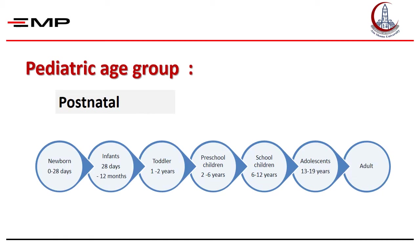After birth starts the postnatal period. The pediatric age group extends from birth to 18 years of age. It is a very dynamic period characterized by continuous changes. So a 3-month-old child is different from a 4-year-old child or a 14-year-old child, so the whole pediatric age group is classified to phases. From 0 to 28 days is the neonatal period. Infants are those aged from 1 month to 12 months, toddlers from 1–2 years, preschool children from 2–6 years of age, school children from 6–12 years, adolescents or teenagers from puberty to adulthood, usually from 13–19 years.